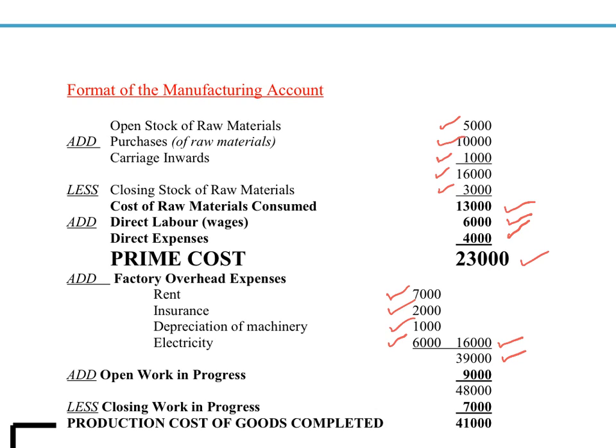Many students stop at $39,000 and forget about work in progress — which simply means a half-finished item, such as a half-finished toy train. We add the opening work in progress of $9,000 (the stock of half-finished goods at the start of the year, which the factory will complete first) to give a total cost of production of $48,000. We then subtract the closing work in progress — the half-finished trains at year end — because they're not finished and can't be counted as a cost. This gives us a production cost of $41,000.